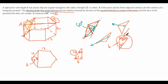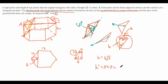So that means this side has length 6. What does that mean for H? Well, using the properties of a 30-60-90 triangle, we find that H is just 6 times the square root of 3. So that means H squared is equal to 36 times 3, which is equal to 108. And that is our answer.